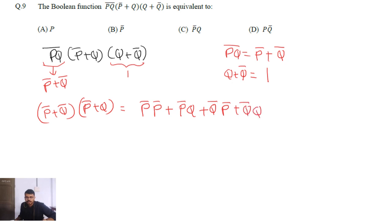Now from boolean algebra, q·q̄ will be equal to 0, because if q = 1 then q̄ = 0, giving 1·0 = 0, and if q = 0 then q̄ = 1, giving 0·1 = 0. So this term vanishes.